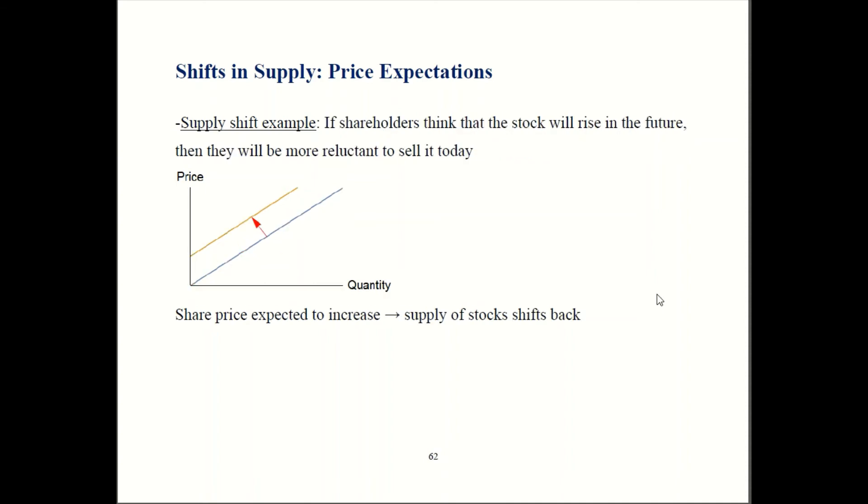It also is reversible. A lot of our examples in this class are reversible, which means it goes in the other direction as well. If you think that the share's price is going to go up in the future, then you want to hold on to your stocks. You don't want to sell them. So now shareholders become more reluctant to sell. That's going to decrease the supply of stocks. Supply is going to shift back in that case.